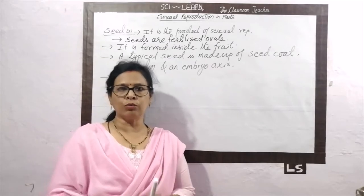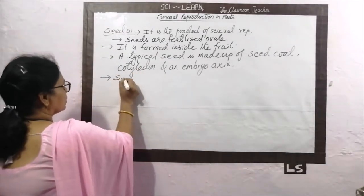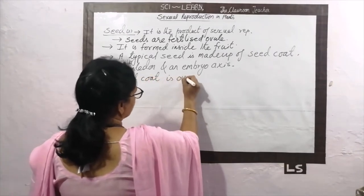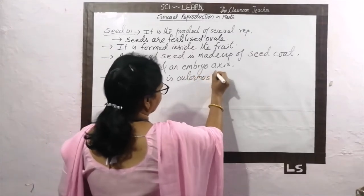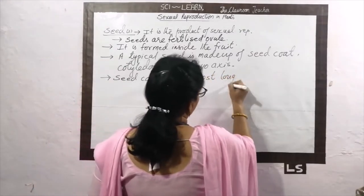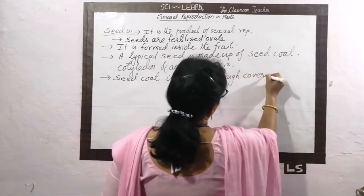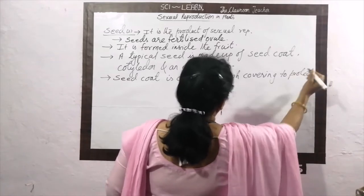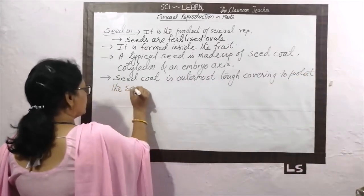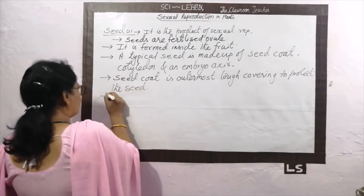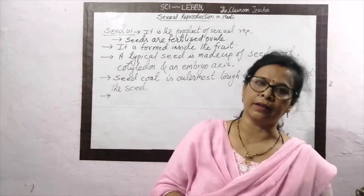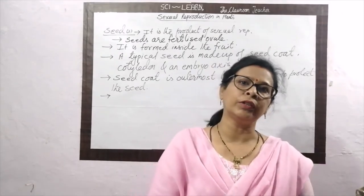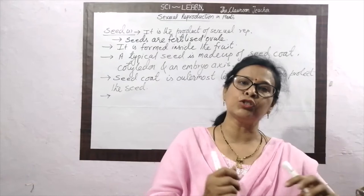What is the seed coat? The seed coat is the outermost covering to protect the seed. What about the cotyledon? Cotyledon may be swollen due to the storage of food — the food is stored in the cotyledon.